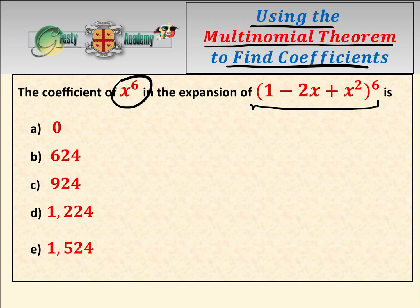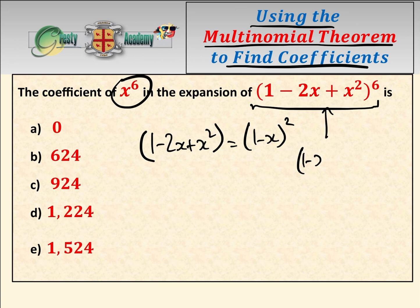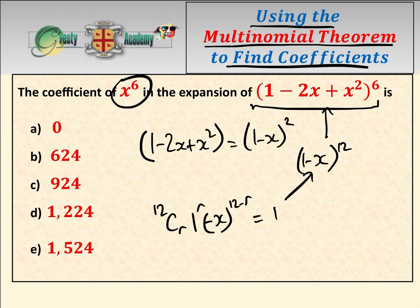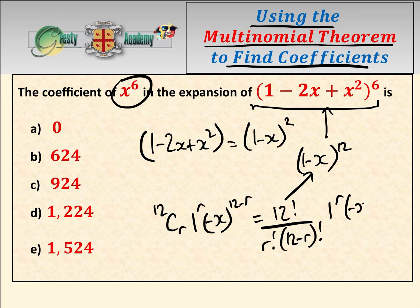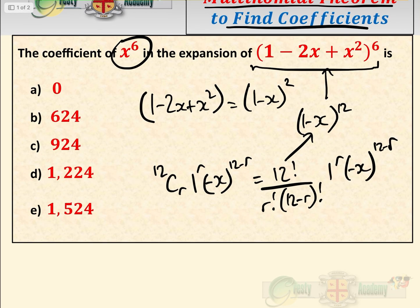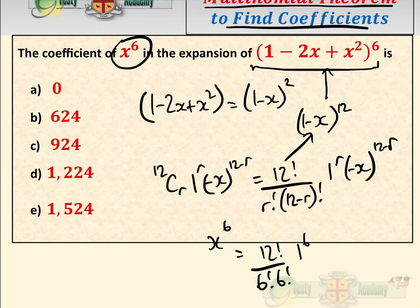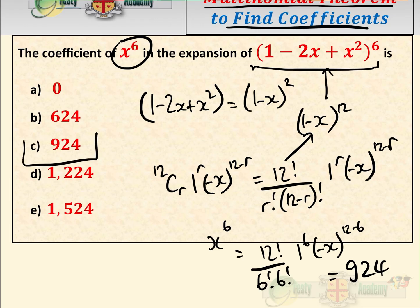Before we go into using the multinomial theorem, if you were fortunate enough to get this question in an exam there is actually a quick way of doing it, because 1 minus 2x add x squared is of course (1 minus x) squared, and so this becomes (1 minus x) to the power of 12. Then all we need to do is find the coefficient of x to the 6 using the general term of binomial expansion: 12Cr times 1 to the r times (minus x) to the 12 minus r, which we also write as 12 factorial over r factorial times (12 minus r) factorial. Putting r equals 6 gives us 12 factorial over 6 factorial times 6 factorial times 1 to the power of 6 times (minus x) to the power of 6, which equals 924.